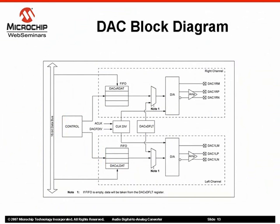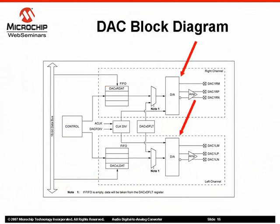Let's take a look at the DAC block diagram. Each channel has its own forward deep FIFO and its own D-to-A converter. Each DAC channel has three voltage outputs, and as stated previously, not all devices have the midpoint voltage. Those channels are left and right positive, left and right negative, and the left and right midpoint.